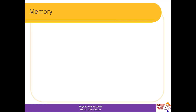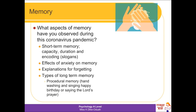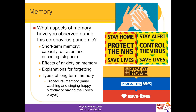We come on to memory, which you've been studying with Miss Smith. When I think about memory, I think about the slogans we've seen during the pandemic — 'Stay Home, Protect the NHS, Save Lives,' and the upcoming 'Stay Alert, Control the Virus, Save Lives.' George Miller came up with the magic number, describing the capacity of short-term memory — research shows our short-term memory can hold seven plus or minus two items.